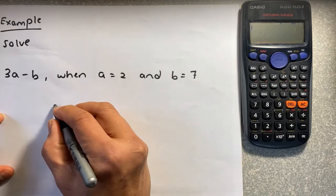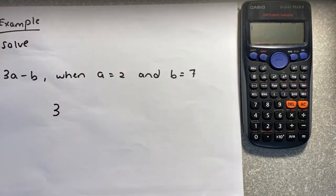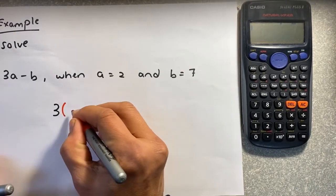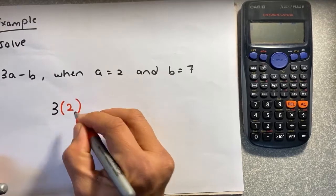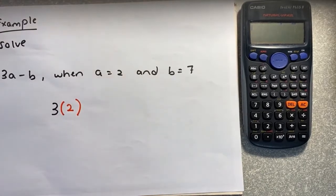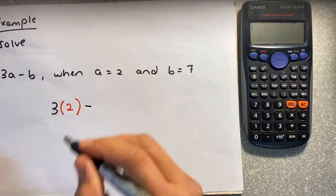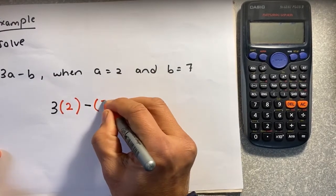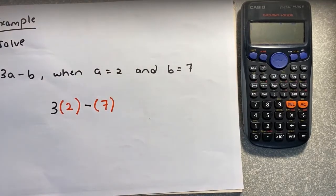Instead of a, you're going to replace or substitute. So when you replace a number, you put a bracket, and instead of a, you replace with 2. Close the bracket, and then you're going to minus the b, which is 7. Put another bracket around it, and close the bracket.